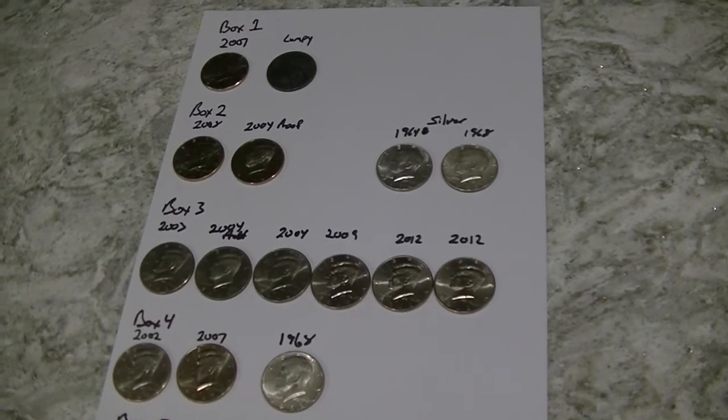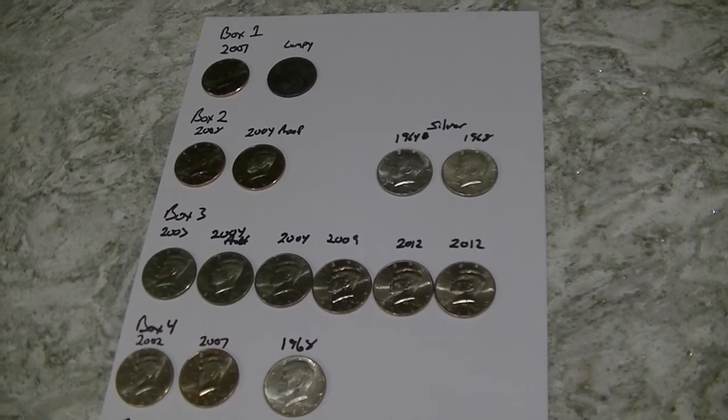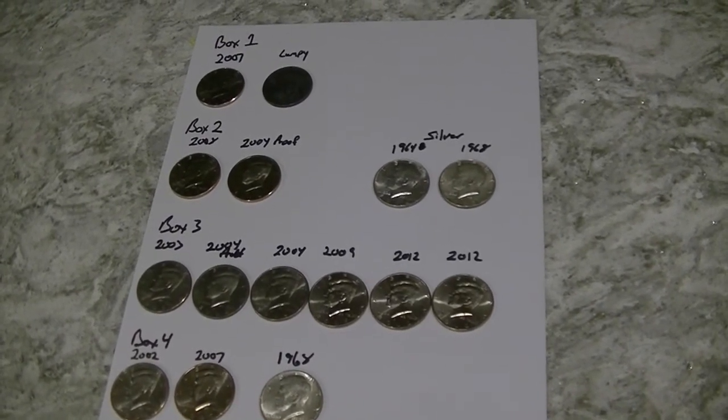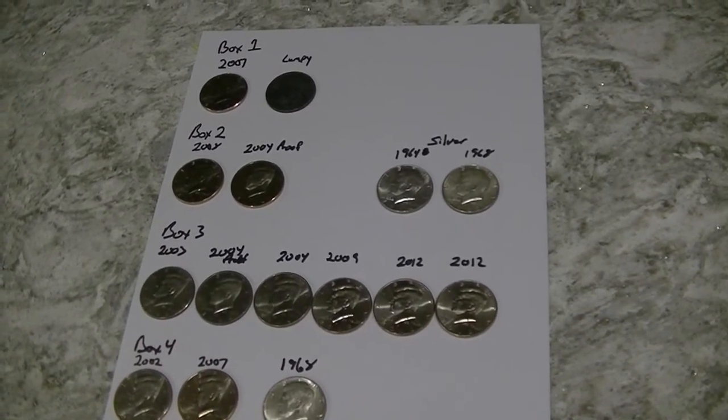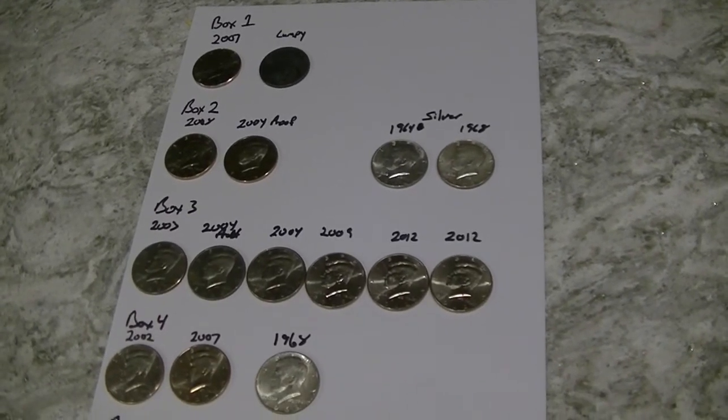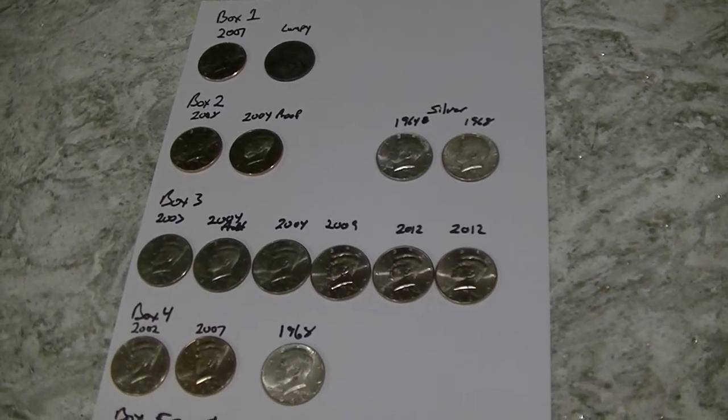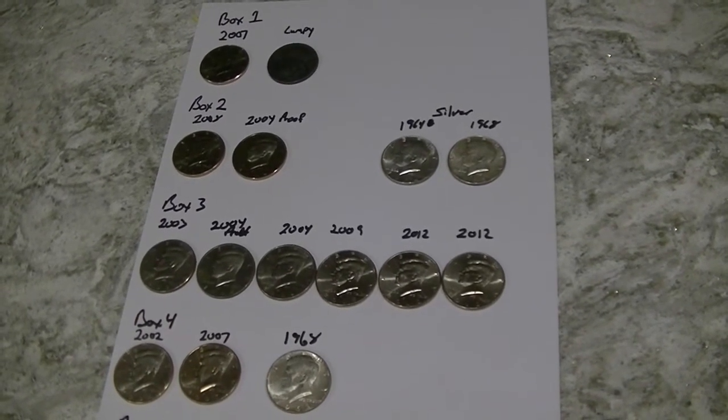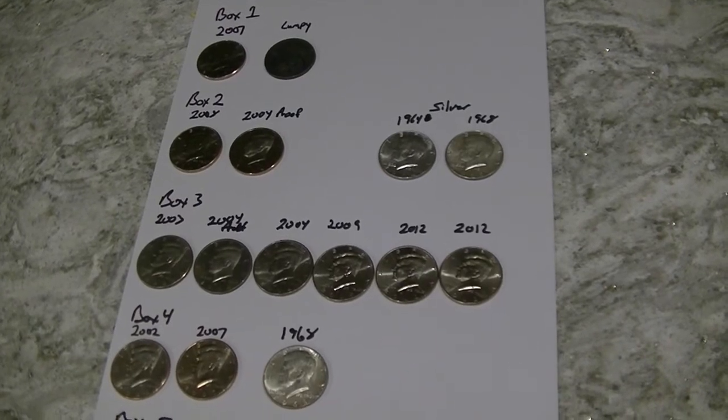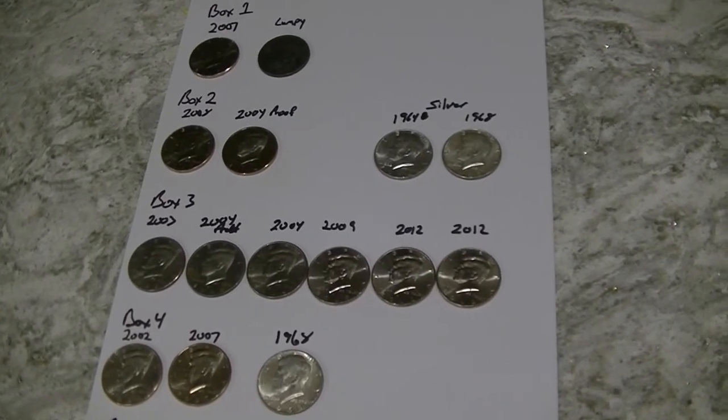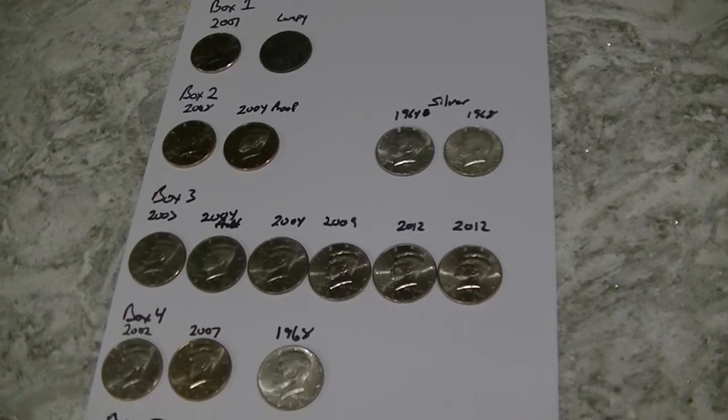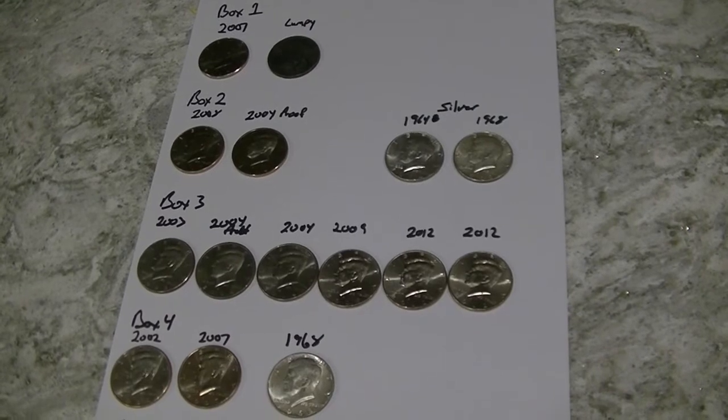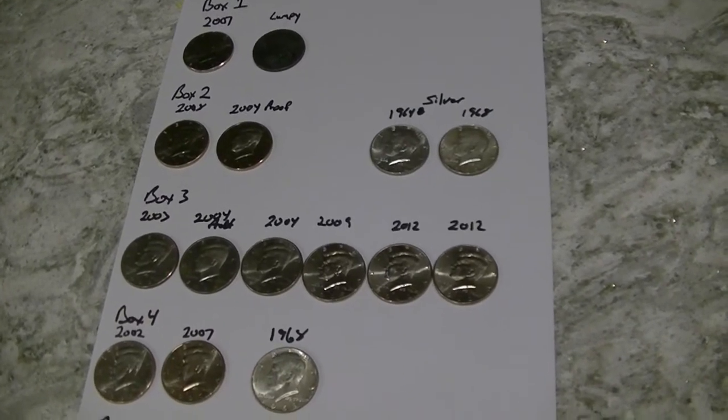Box number two had the 2008 and 2004 proof in the NIFC. And then two silver halves as well, a 1964 and a 1968. And then we have box number three, which was a box of NIFCs. Had the 03, the 04 proof, another 04, an 09, and two 2012s. And then box four, we struck silver again in there. We had a 2002 and a 2007 NIFC and a 1968 silver. And then, like I said, box five was a blank.